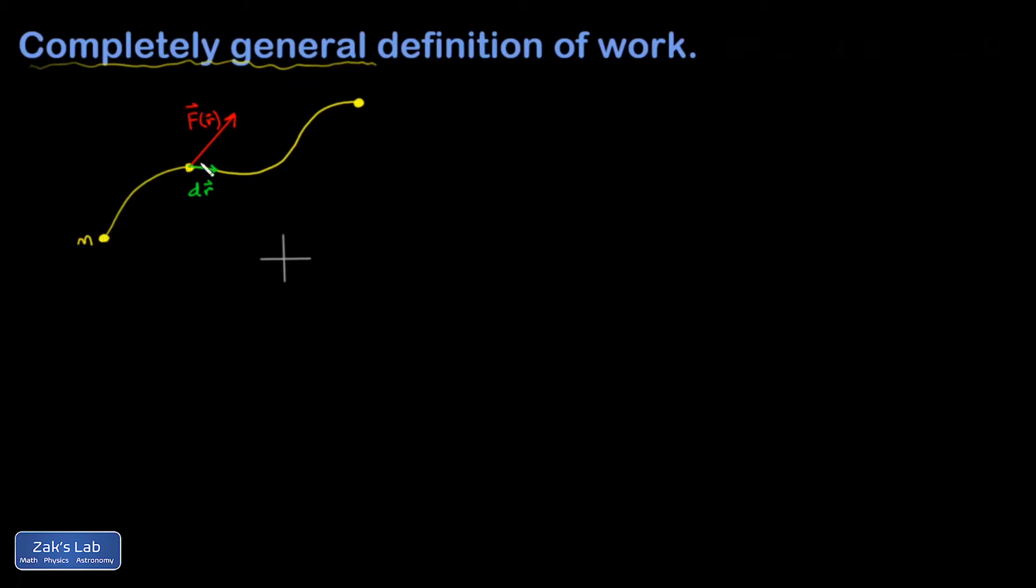So what I have here is a mass that's been moved from some initial value to some final value. And since we're being completely general, I have located an origin in this space, and every position is indicated by a vector pointing to that position.